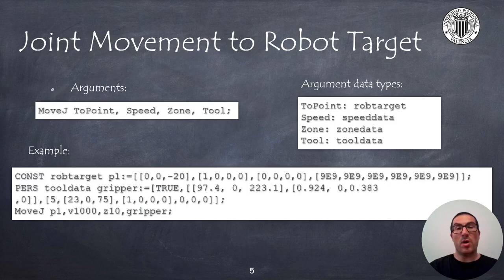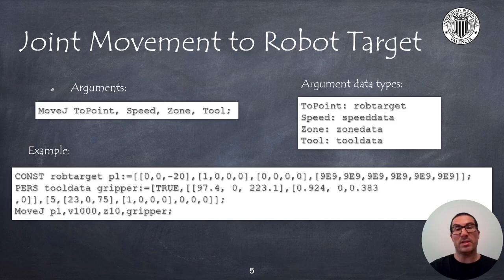The MoveJ instruction also performs a non-linear movement, but the difference from the MoveAbsJ instruction is that now the point to move is not the joint target, but a robot target data type, containing the position and orientation of a given point. The remainder of arguments are identical.